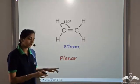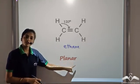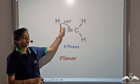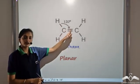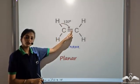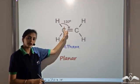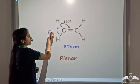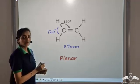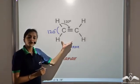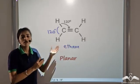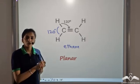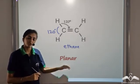In this planar structure, the angle between the hydrogen atoms and the carbon is 120 degrees, and similarly the other H–C–C angle is also 120 degrees. This is the only arrangement in which all hydrogen atoms are at maximum distance from each other, confirming that ethene has a planar structure with 120-degree bond angles.